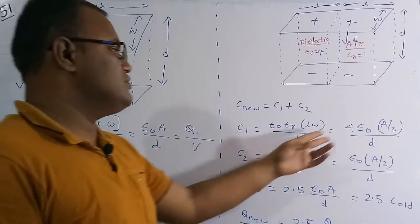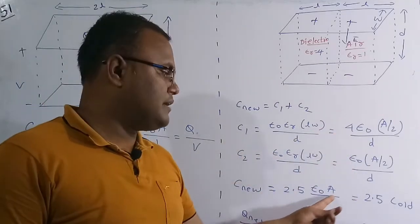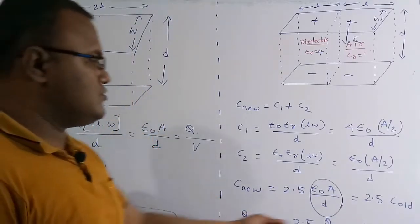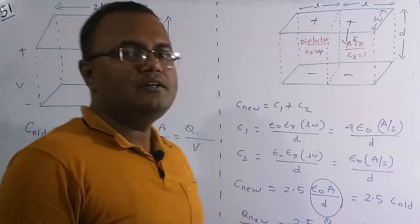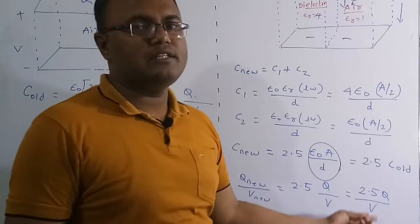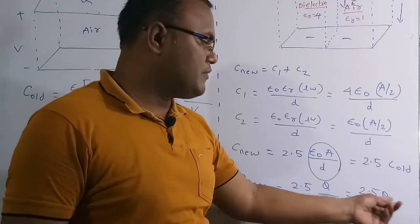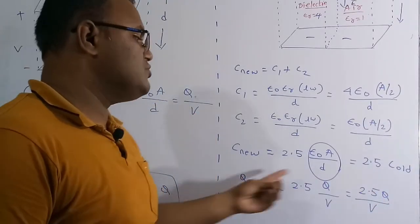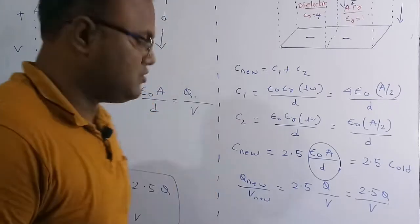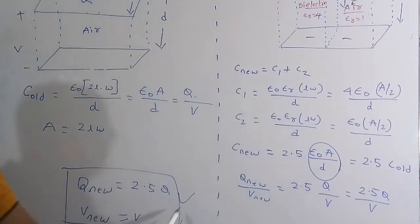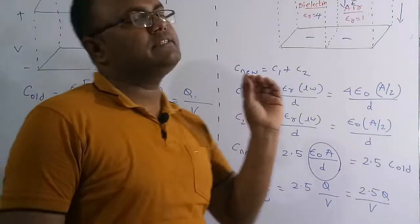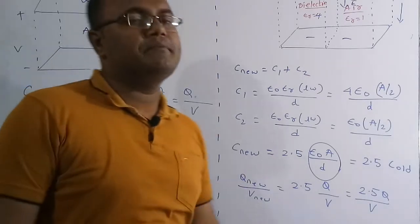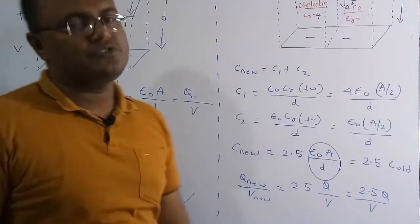Adding C1 plus C2 gives 2.5 times epsilon times A divided by d, which equals 2.5 times C_0. Since C_new equals Q_new divided by V_new and C_0 equals Q/V, we get 2.5 times Q/V equals Q_new/V_new. Comparing numerator and denominator: Q_new equals 2.5Q and V_new equals V. So with the dielectric slab inserted, the charge increases while the voltage remains the same.